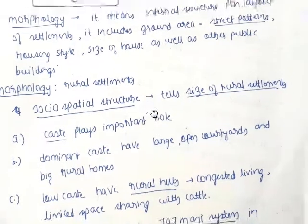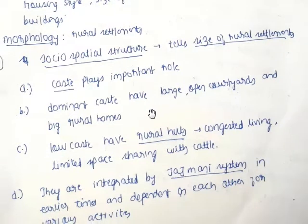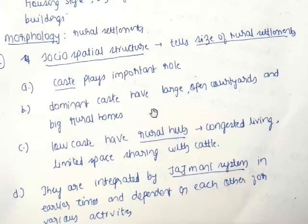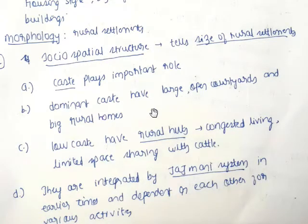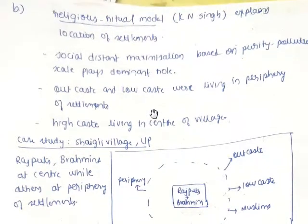The morphology of rural settlements depends on the socio-economic structure and social factors. Caste plays an important role — dominant castes have large open areas and big homes, while lower castes have congested living with limited space, sharing with cattle. They were interconnected through the jajmani system in earlier times, depending on each other for various activities, religious functions, and rituals.